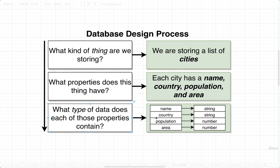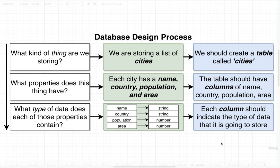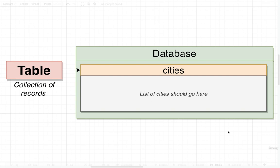We're then going to take these three answers and use them to actually set up our database. The answer to the first question — we're storing a list of cities — means we're going to create something inside our database called a table, and give this table a name of cities. A table sits inside our database and stores a collection of records that all have some related meaning. We are only ever going to store data inside tables, so it's very important to think about how to properly generate, name, and design them.